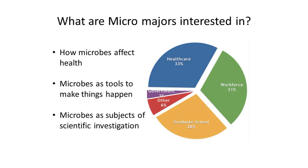So what are micro majors interested in? There are really three major things. Number one is how microbes affect health. If you think about all of those microbes, we've got a lot of pathogens, we've got the viruses — they have a very large effect on people who get sick. About 50% of anybody who's in the hospital is there because they have an infectious disease. And in addition to the pathogens, there's a lot of other microbes that live in and on us — the microbiome.